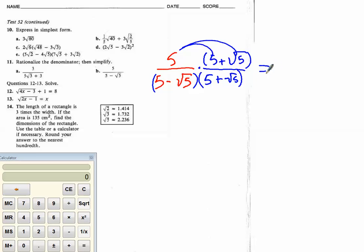5 times 5 is 25. 5 times root 5 is 5 root 5. 5 times 5 over 5 times 5 is 25. And we know the middle term is going to cancel out so we just have to multiply the ends together. Negative 5, a root 5 times positive root 5 is negative 5.